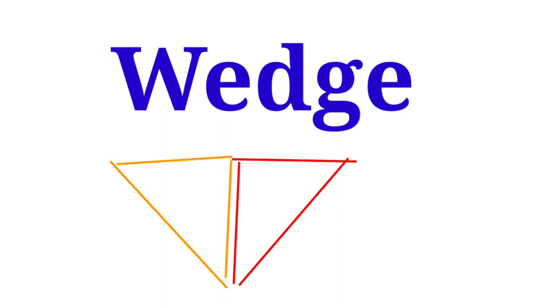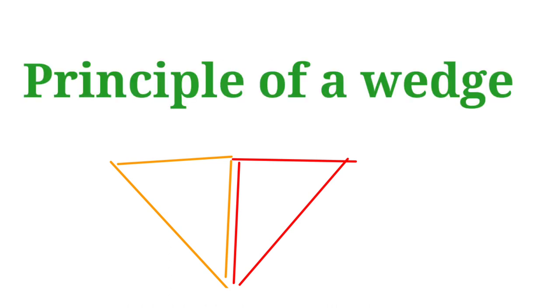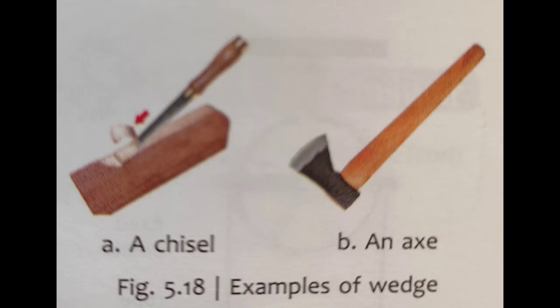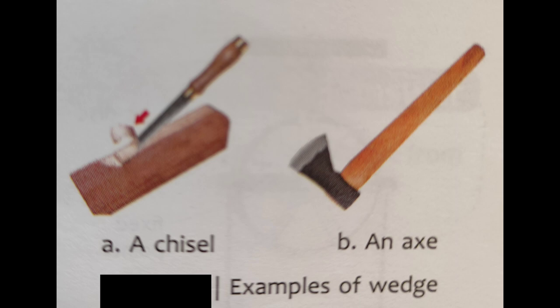Now we come to know about the wedge. A wedge is a double inclined plane such that the two sloping surfaces taper to form a sharp edge. The sharp edge is used to cut, slice, or push things apart. A knife, an axe, and a chisel are some common examples of wedges. Here you can see the chisel and the axe as examples of wedges.